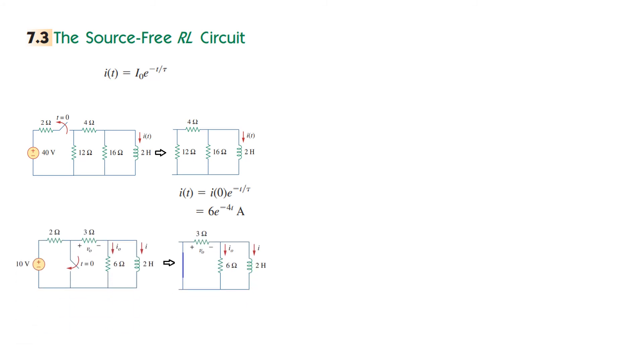Another example: here also when this switch is closed, this circuit is separated from this portion. So after T greater than 0, this is the circuit which does not have a source in it, and so this will also have an equation...